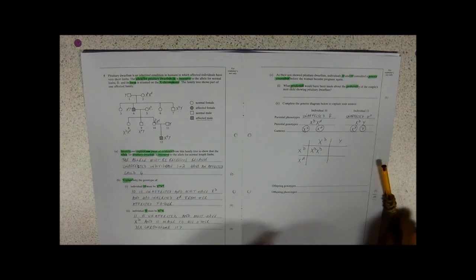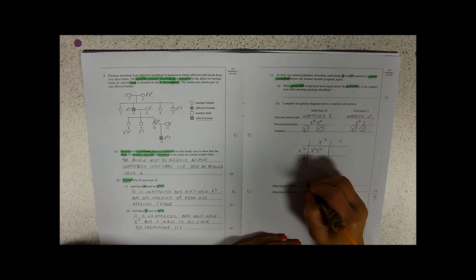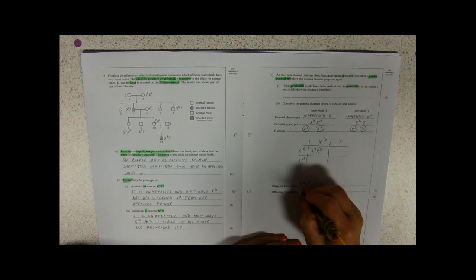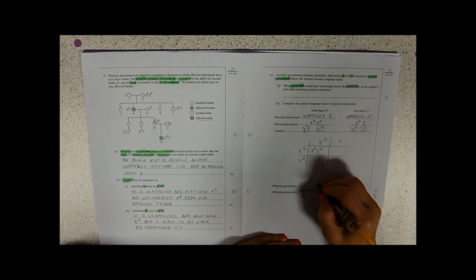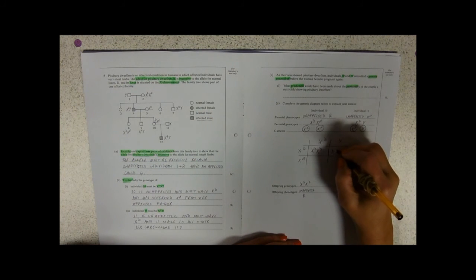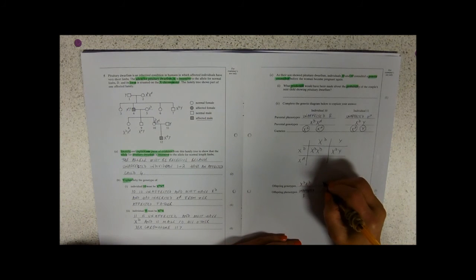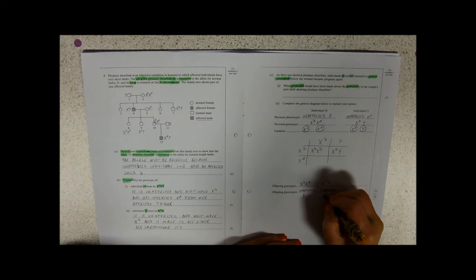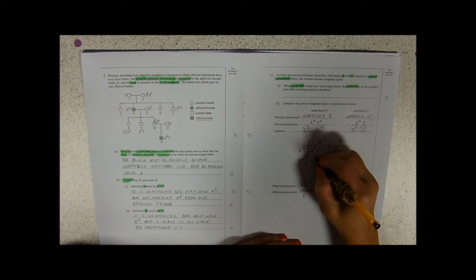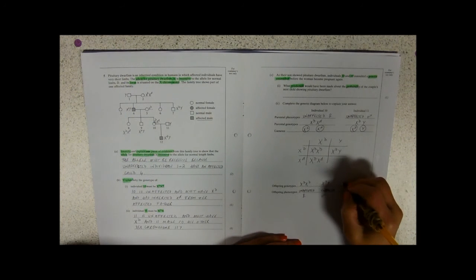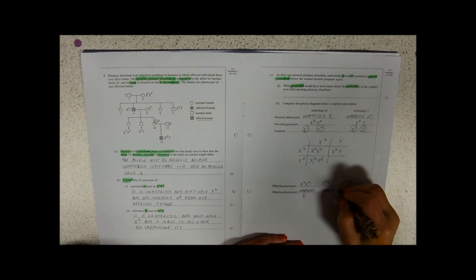My offspring genotype. X big D, X big D, unaffected female. Next one's X big D Y, unaffected. That will give you enough room to write this stuff in. X big D, X little d.